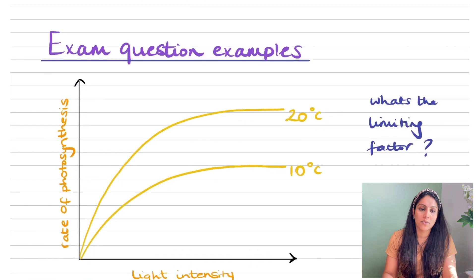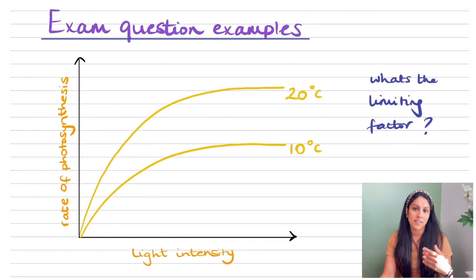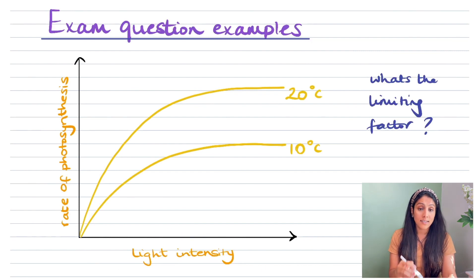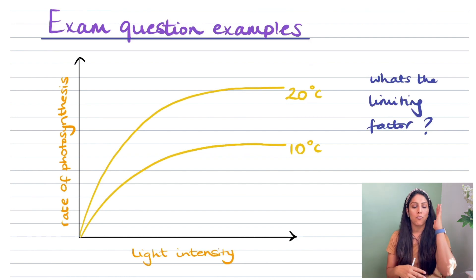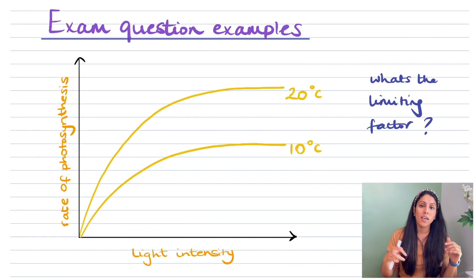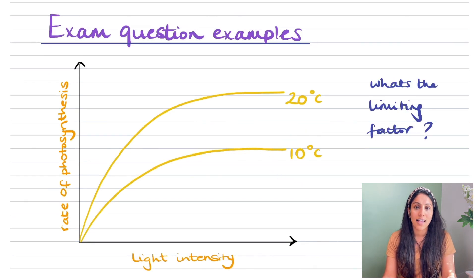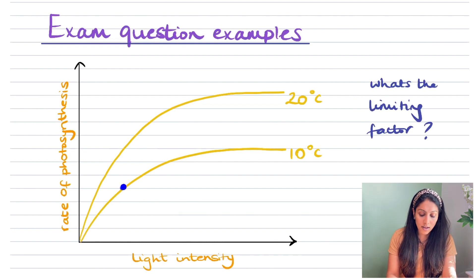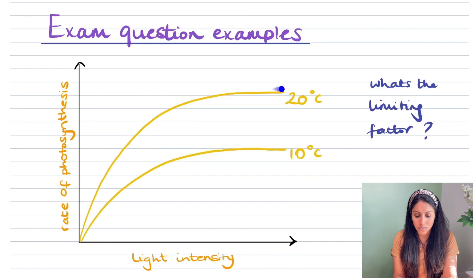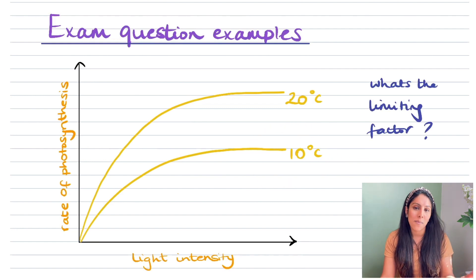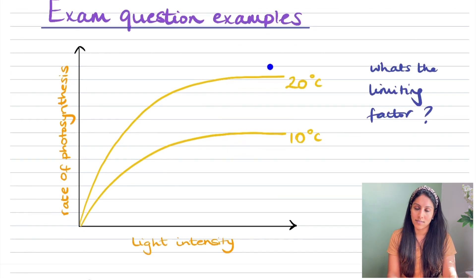Here's an exam question example. This graph has two lines, both showing light intensity on the x-axis and rate of photosynthesis on the y-axis. One experiment is at 10°C and another at 20°C. The rate of photosynthesis is lower at 10°C and higher at 20°C, so the limiting factor in the first experiment must be temperature — the higher temperature of 20°C allows the rate of photosynthesis to increase further.